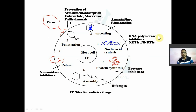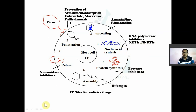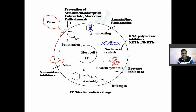Nucleotide reverse transcriptase inhibitors block replication of DNA. Non-nucleotide reverse transcriptase inhibitors block the conversion of RNA to DNA. Protease inhibitors inhibit protein maturation. Structural proteins (capsid and tail) and functional proteins (enzymes) are synthesized separately, and the assembly of these is inhibited by Rifampicin. So Rifampicin prevents the assembling or packing of viral components.